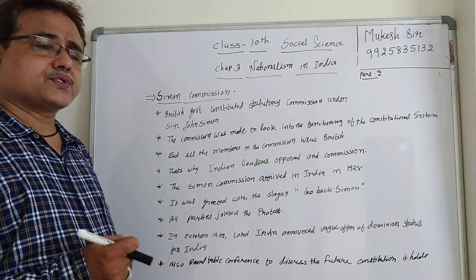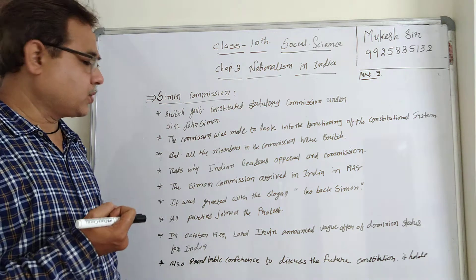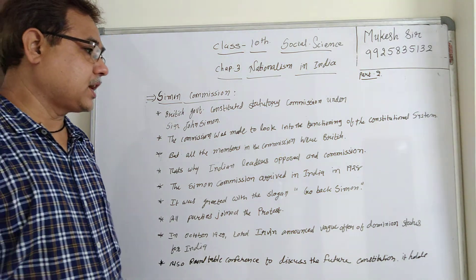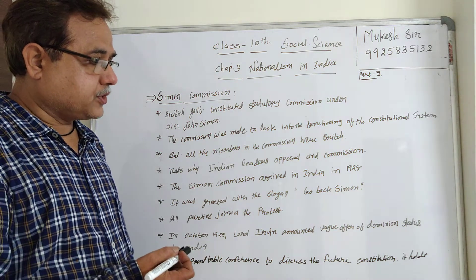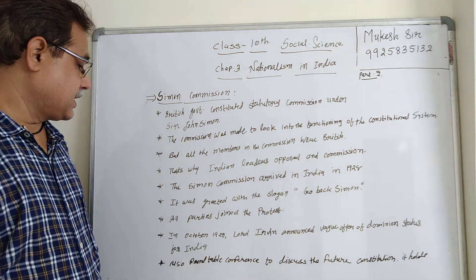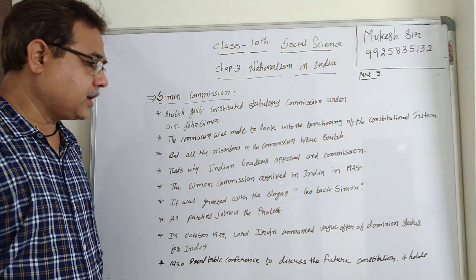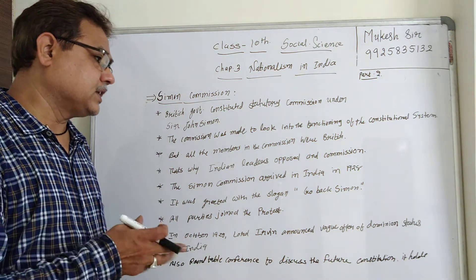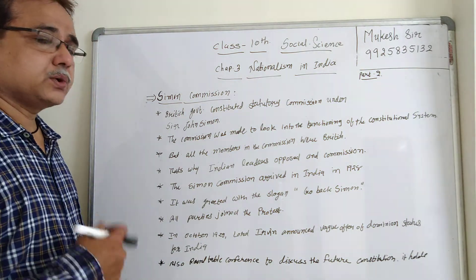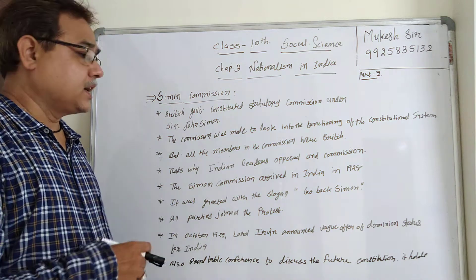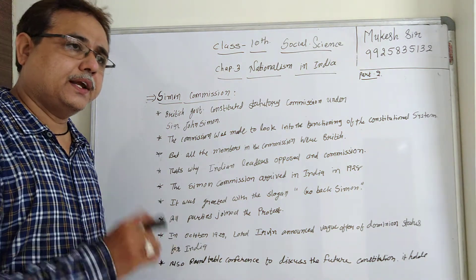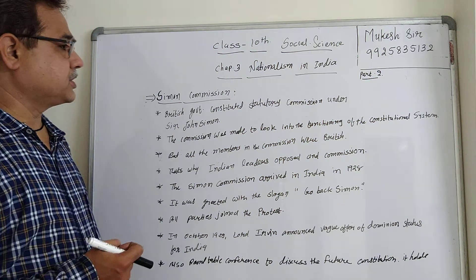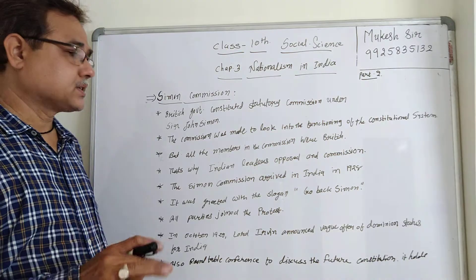All parties joined the protest against the British. Then in October 1929, Lord Irwin announced a vague offer of Dominion status for India, and also a Round Table Conference to discuss the future constitution. So Indians greatly opposed the Simon Commission.